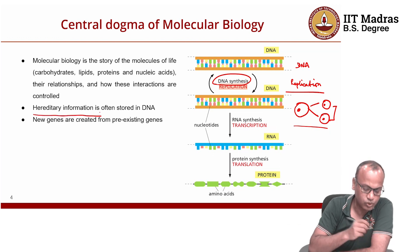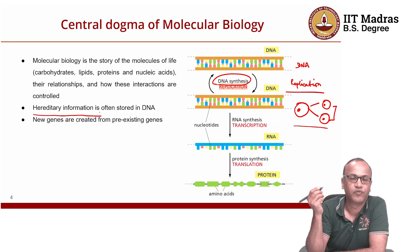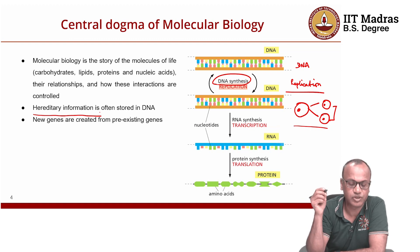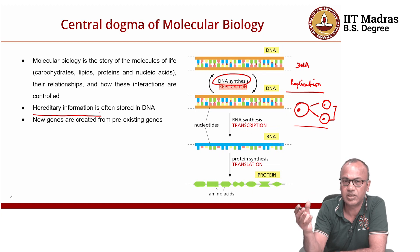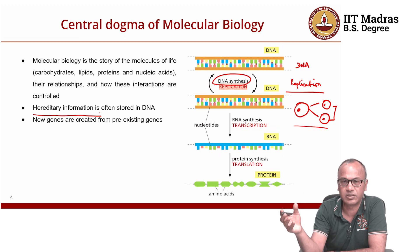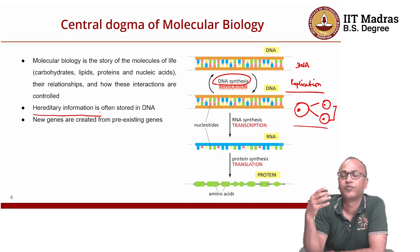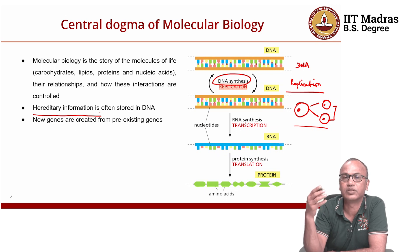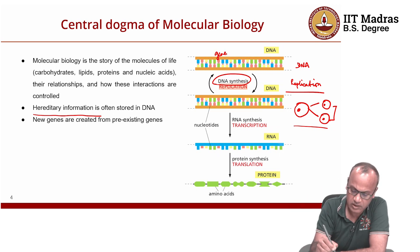Hereditary information is stored in DNA. With few exceptions, for the large majority of living organisms on Earth, hereditary information is stored as DNA. The functional unit stored in DNA is called a gene. Each species has a given set of genes, and new genes are usually created from pre-existing genes — there is no de novo synthesis of a gene, though there can be de novo functionalization. When genes in this DNA are copied, the same genes exist in the next generation as well.